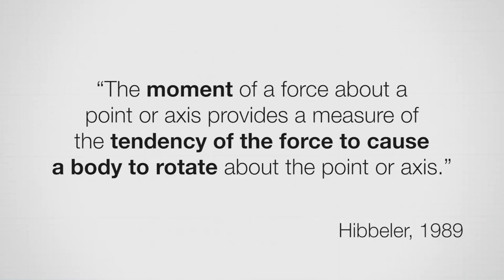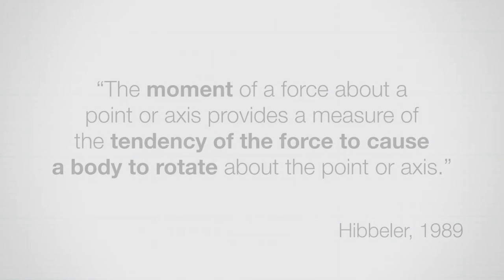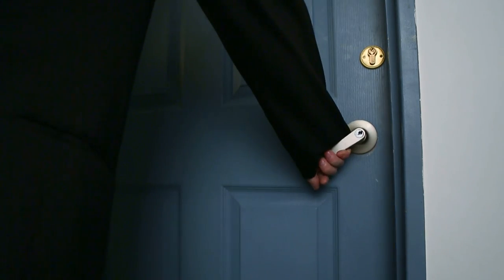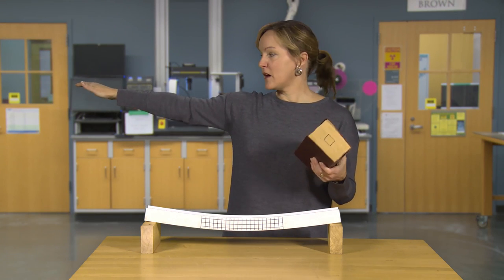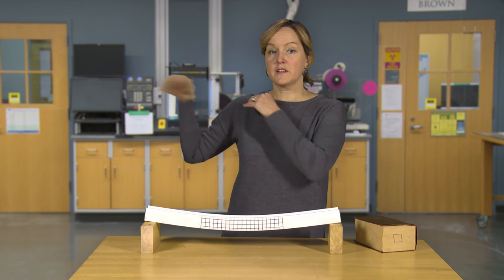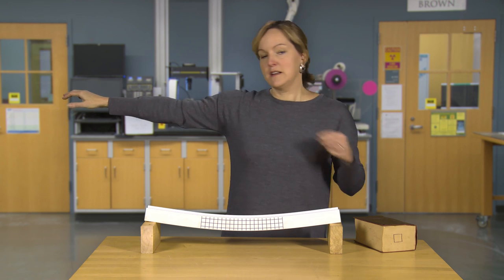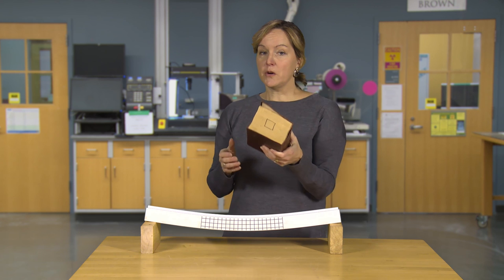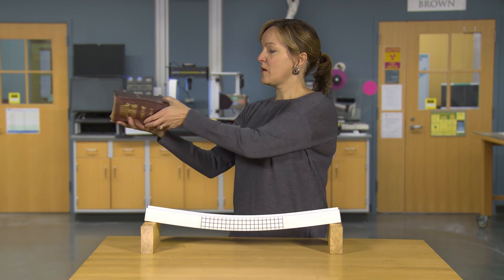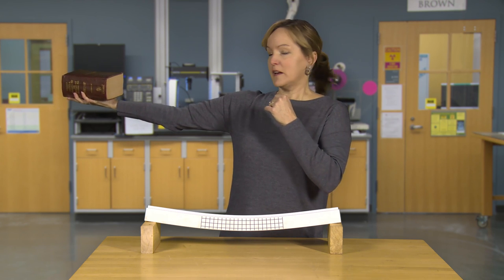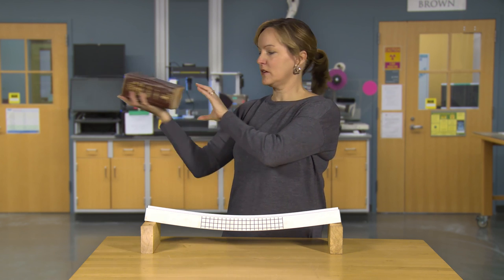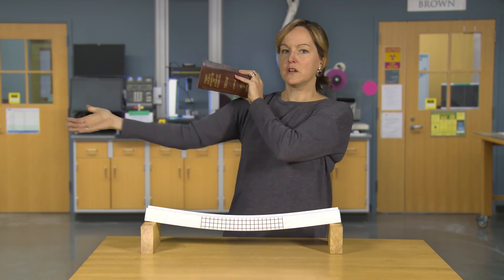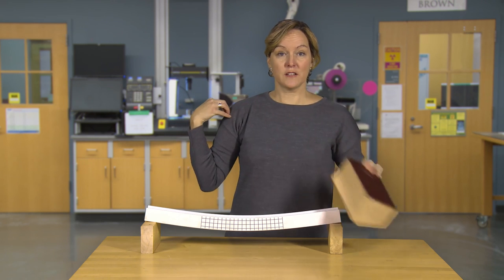Think of a door — it's easiest to open at the doorknob because you generate a larger moment. Similarly, if I extend my arm, it can be modeled as a cantilever beam, fixed at my shoulder. If I hold a book, is it easier to hold it at my palm or near my shoulder? It turns out it's typically easier to hold it closer to the shoulder. The book weighs the same either way — the difference is the distance. The further the book is from the support point, the more it tries to cause rotation.